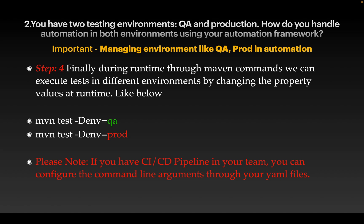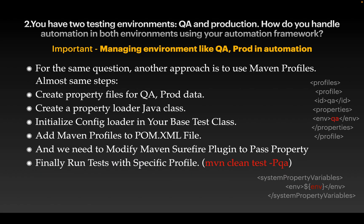These are the four simple steps to handle automation in multiple environments. Note: if you are using CI/CD pipelines, you don't have to hard-code Maven test values in your terminal. You can mention them in your YAML files, and whatever environment you want to run will be triggered in your CI/CD pipeline. Let's look at another approach for the same question.